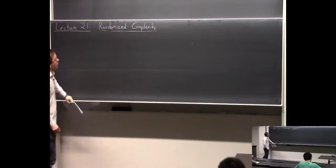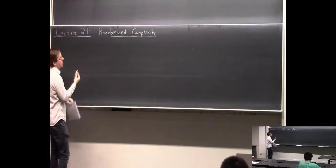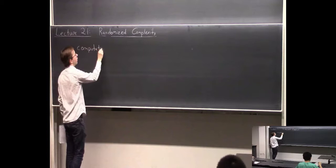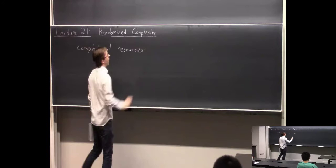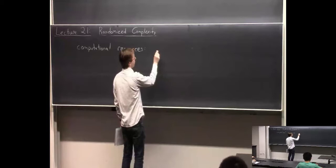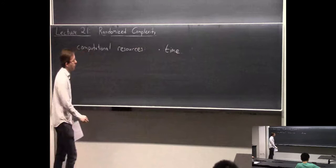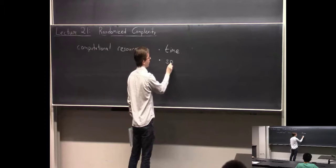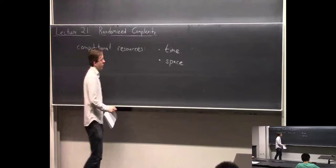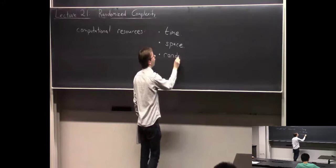Today we're going to start a new segment in the course. Let me recap a little bit what we've studied. We've talked about the computational resources that you might care about when you're designing algorithms, and how to understand how much of these resources are needed. The main one in complexity theory and algorithms that you worry about is time, running time. Another important one that we spent five lectures or so on is space, memory usage. Starting today and going for a couple lectures, we're going to talk about randomness.